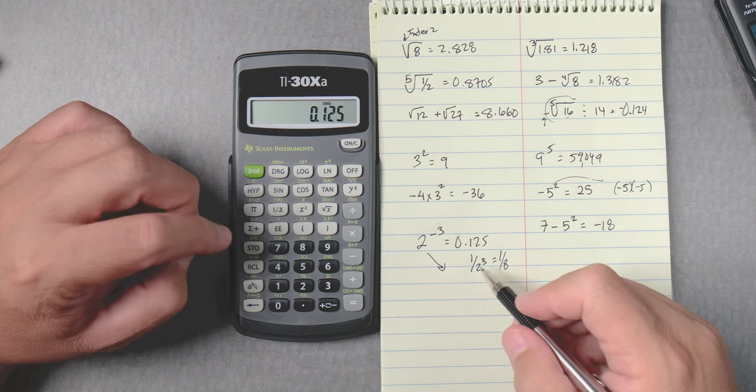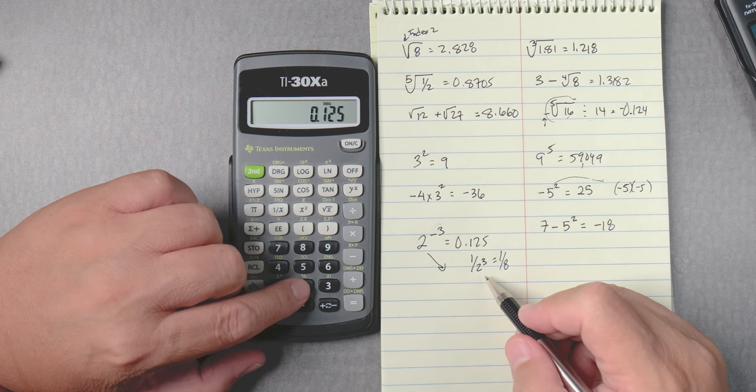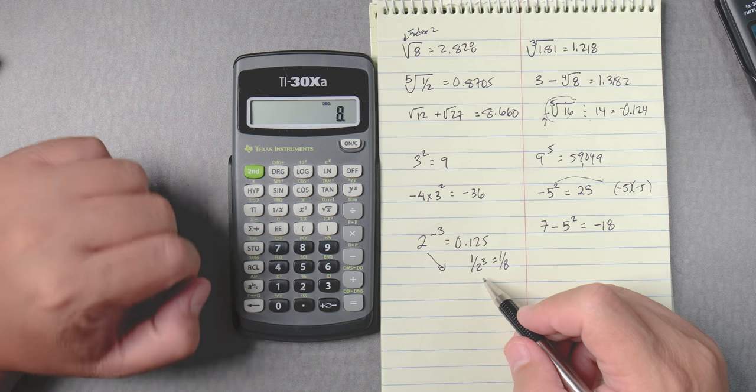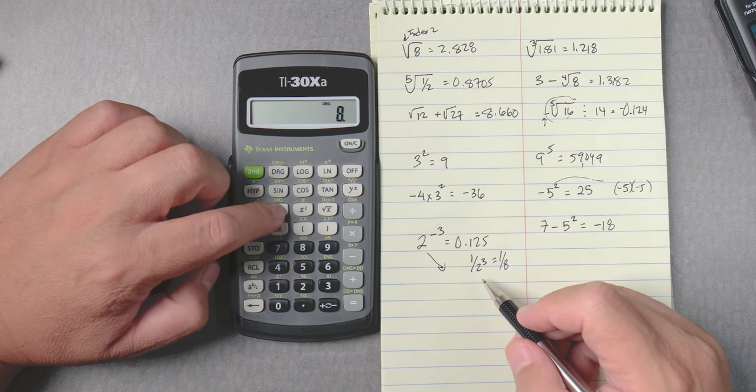You could also do it like 2 to the power of 3 equals, and then you can do 1 over x and it gives you the answer 0.125.